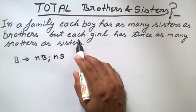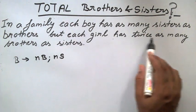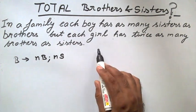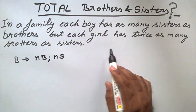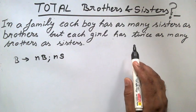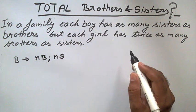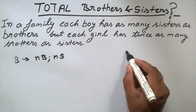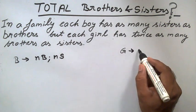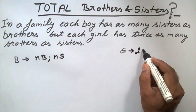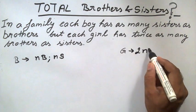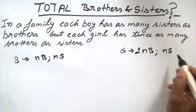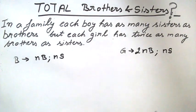The second condition is: each girl has twice as many brothers as sisters. That is, each girl has twice as many brothers as sisters, so we write: twice brothers and n sisters.